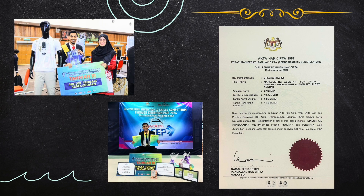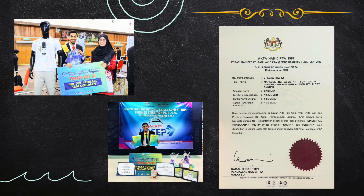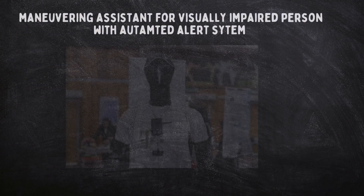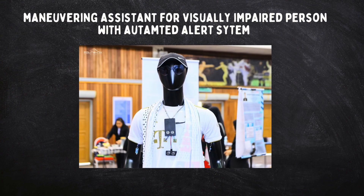Here are some achievements of this product. For your information, this product is already registered under the Copyright Act 1987, as you can see on the right. This is the Maneuvering Assistant for Visually Impaired Person with Automated Alert System. Thank you.